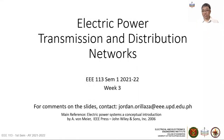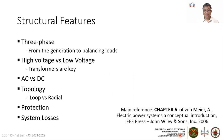We continue our discussion on the electric power T&D networks. After establishing key reasons for interconnection, let us look at a couple of important features for these interconnections. The main reference is Chapter 6 of Von Meijer.